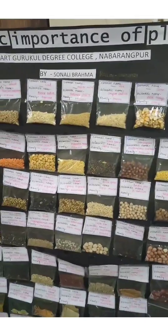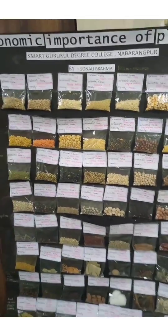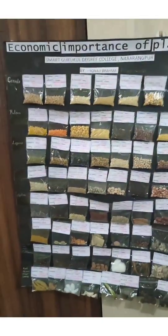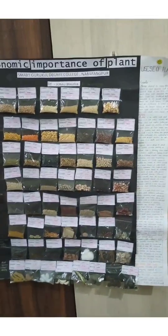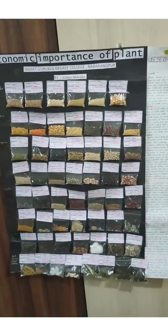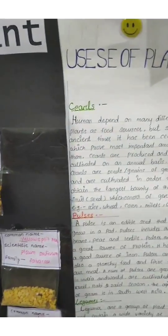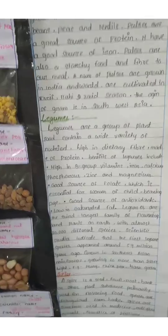My name is Sonali Brahma from Smart Guru Kul Degree College Navarampur, B.C., 2nd year, Department of Botany. I have done a work on Economic Botany.